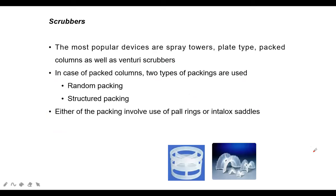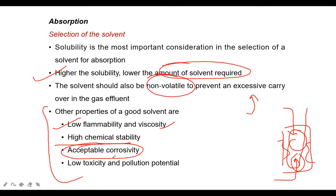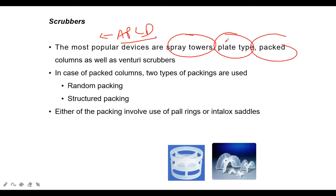Absorption system design involves two things: selection of solvent, which we have covered, and design of the absorber. The most popular APCD devices in terms of scrubbers are spray towers, plate-type towers, and packed columns. In the industry, when you go to one of these chambers, it can be as long as 10 meters - that is 30 to 33 feet - or even 7 meters. These are huge columns.